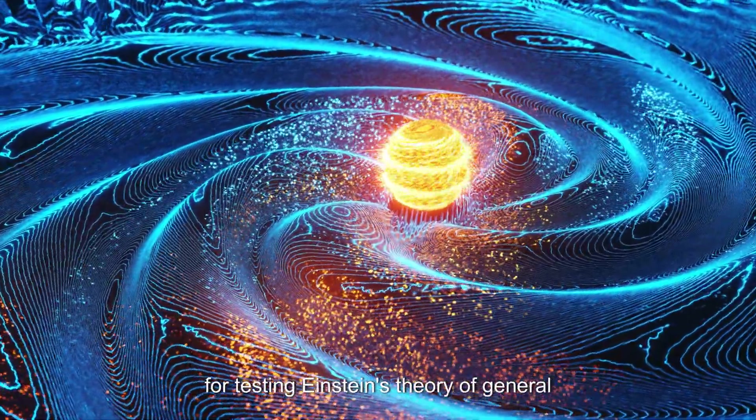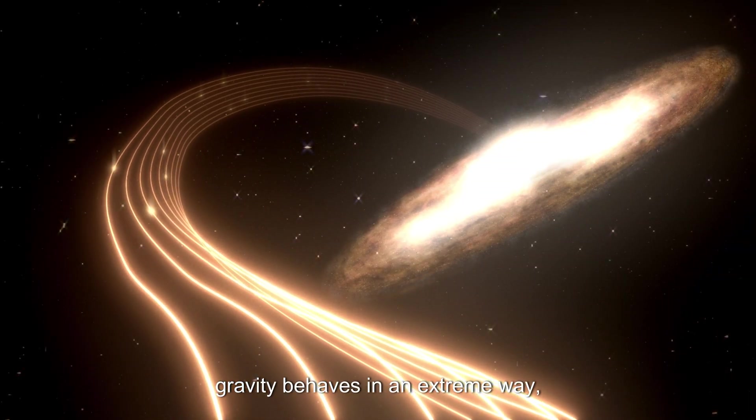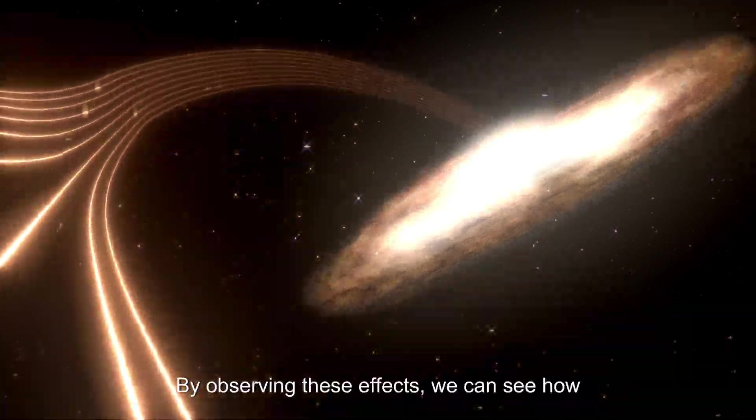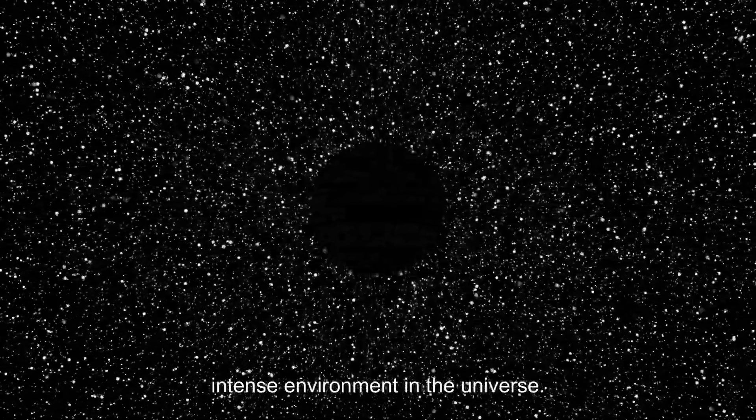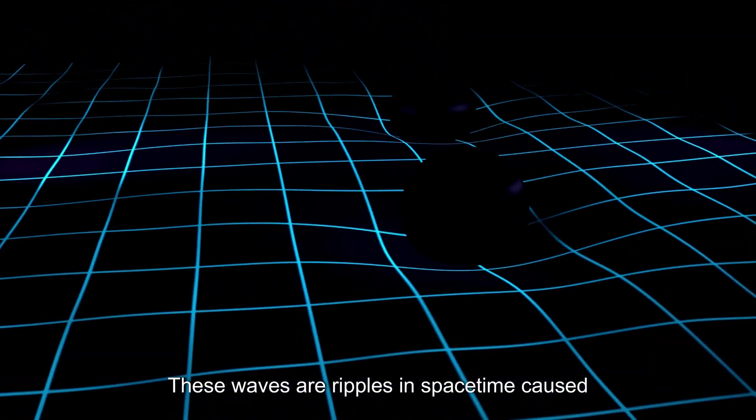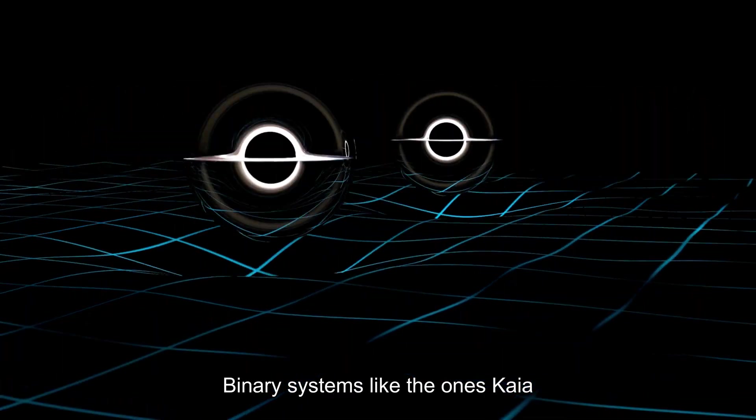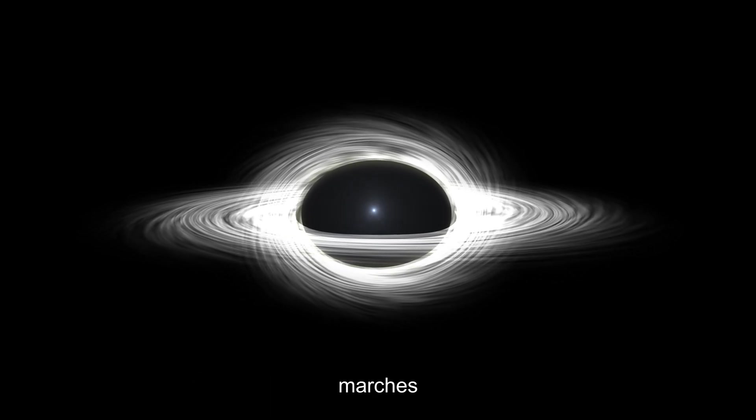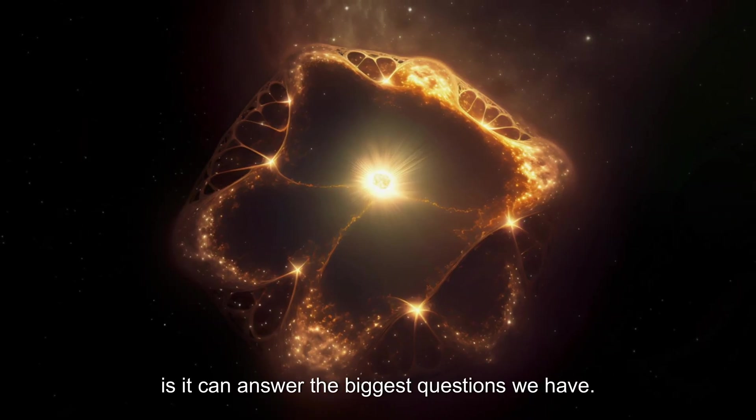But it doesn't stop there. These black holes are perfect laboratories for testing Einstein's theory of general relativity. Near a black hole, gravity behaves in extreme ways, bending light and stretching time. By observing these effects, we can see how well our theories hold up in the most intense environments in the universe. Then there's the potential for gravitational wave detection. These waves are ripples in space-time caused by massive objects in motion. Binary systems like the ones Gaia discovered could emit detectable gravitational waves, offering insights into black hole mergers and other cosmic events.